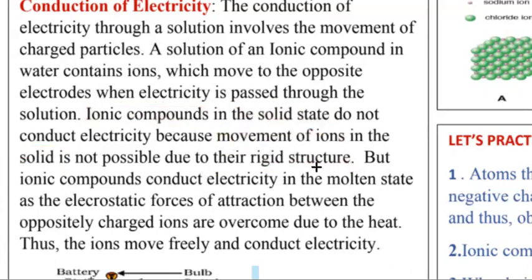But ionic compounds in the molten state do conduct electricity. Because the electrostatic forces of attraction between the oppositely charged ions are overcome due to heat. In the molten state, the heat is so great that the force of attraction is overcome, and the ions move freely and conduct electricity.